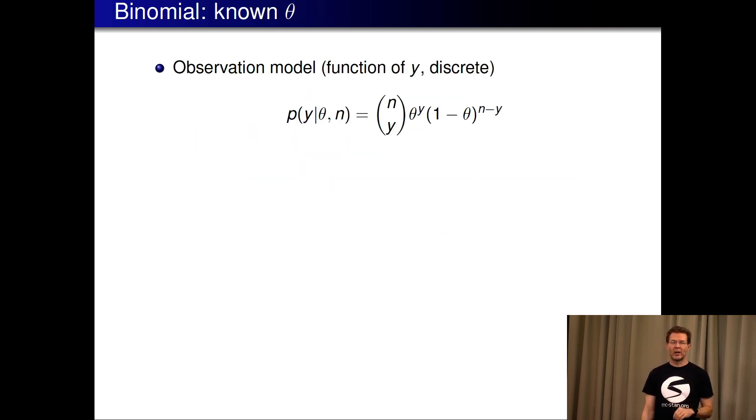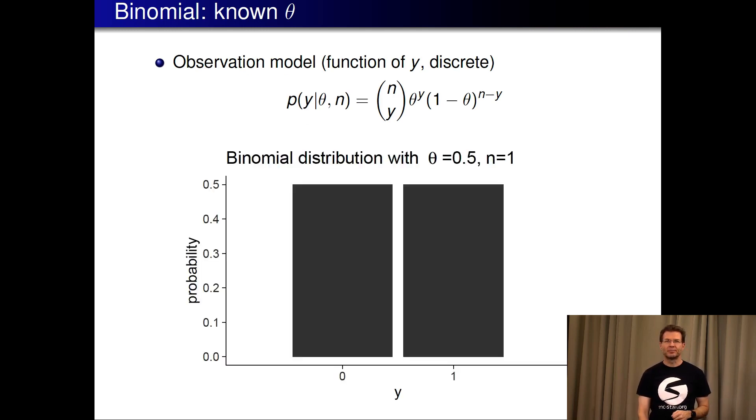Let's see an example. Here I just repeated the equation for our observation model which describes the uncertainty about what kind of observations we might see if we make n trials. The first case is we have just one trial, and if it would be coin flipping, theta would be half, and then there would be equal probability of observing zero heads or one heads.